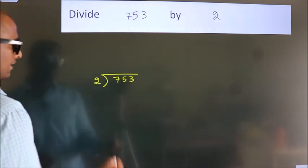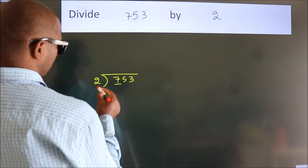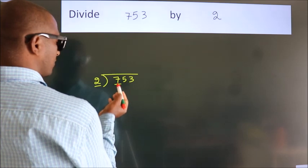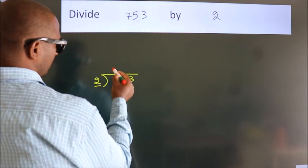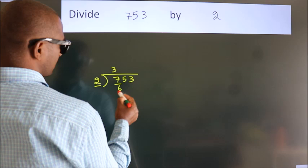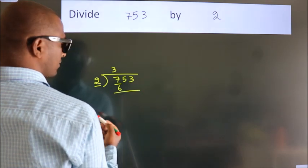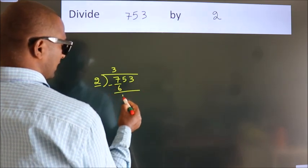Next, here we have 7, here 2. A number close to 7 in the 2 table is 2 threes, 6. Now we subtract and get 1.